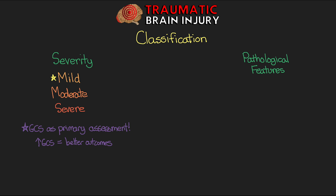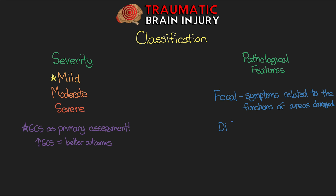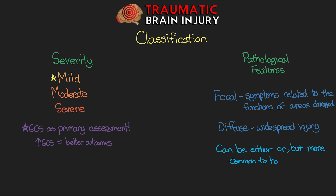If we talk about pathological features as a classification, there are two different types. The first is focal — producing symptoms related to functions of the specific damaged areas, which you can think of as localized. These focal injuries take up space in the skull and can cause compression of surrounding tissue, leading to edema, elevated ICPs, brain shifts, and even herniation. The other classification is diffuse — as the name suggests, it's a widespread injury, often with very little apparent damage on imaging studies. In our patients, you'll commonly see both focal and diffuse components together.